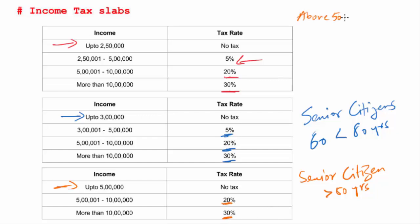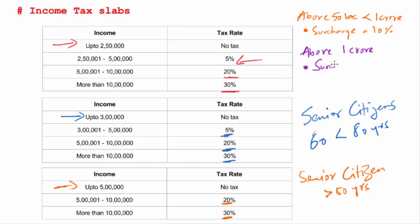People whose income is above Rs. 50,00,000 but less than Rs. 1,00,00,000 have to pay a surcharge of 10%, meaning you add that 10% to the 30% tax — so 40% of your entire income will be taxed. If your income is more than Rs. 1,00,00,000, you pay a surcharge of 15%, making it 45% total. This clearly means the new tax slab has a big blow for rich people.